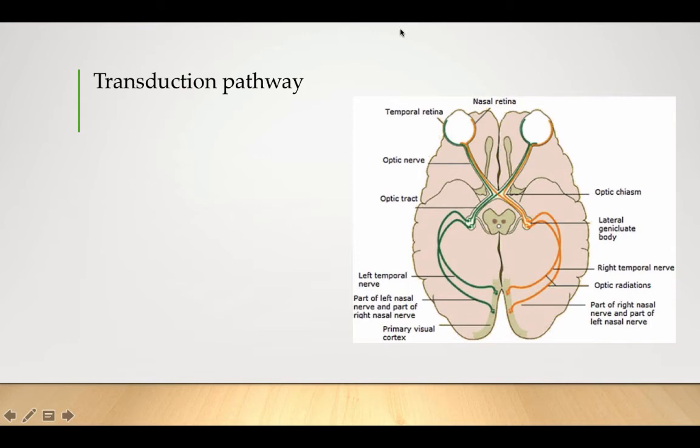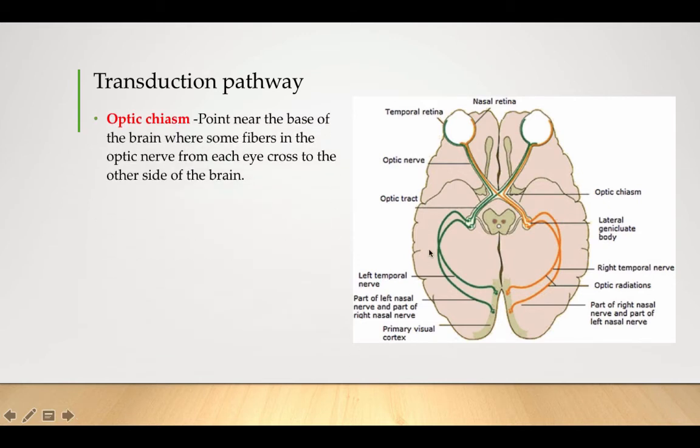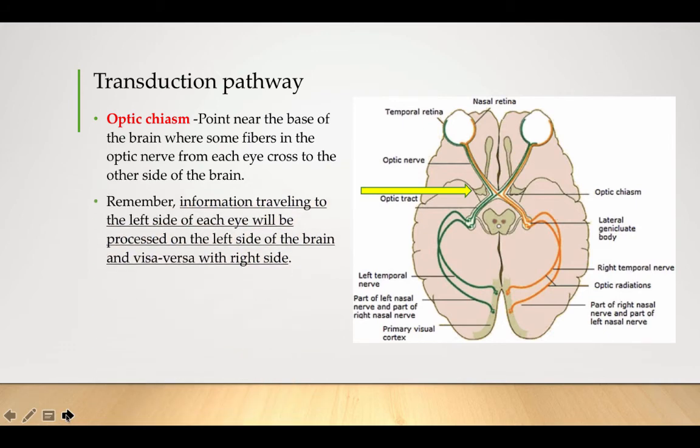Now this is really important, the transduction pathway, so you should know this diagram fairly well. We'll talk about it a little bit here. We're going to talk about the optic chiasm. That is a point near the base of the brain, so we're looking at the brain from the bottom up. This is where signals from each eye, some ganglion fibers from each eye cross over and travel to the opposite side of the brain. We'll talk about that right here. Remember information traveling from the left side of each eye is going to end up on the left side of the brain and vice versa.